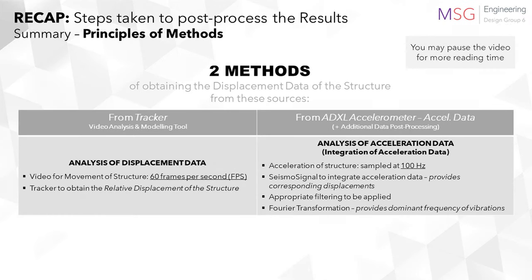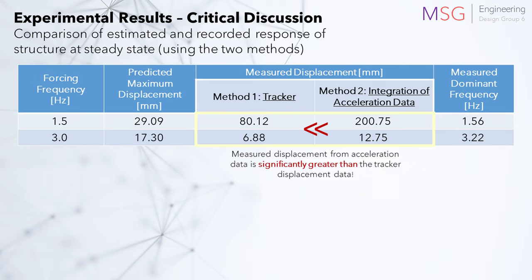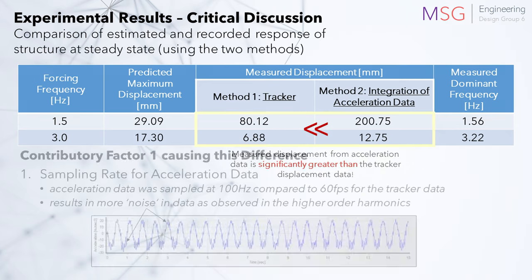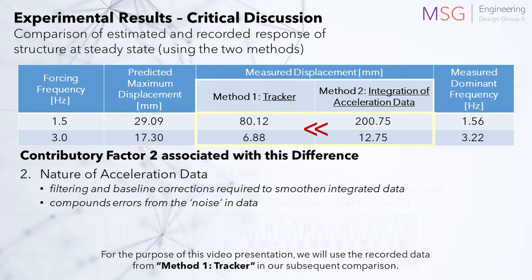This table summarizes the principles of the two methods, which give rise to the results of the two tests as shown here. Both methods of analysis provide different displacement results, of which displacement from the acceleration data was significantly higher. This is due to its higher sampling rate, which generates more noise or undesired data. Consequently, more filtering and baseline corrections are needed to process the displacement data, further compounding any errors in the process.